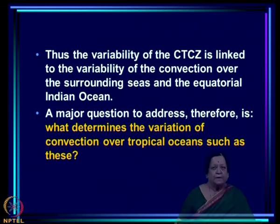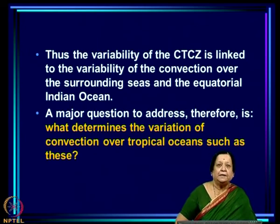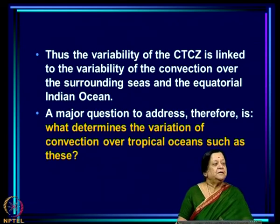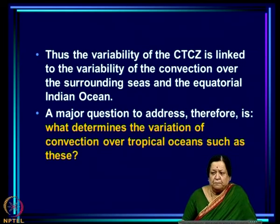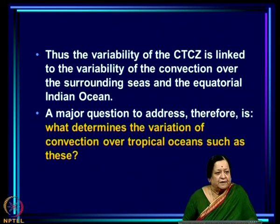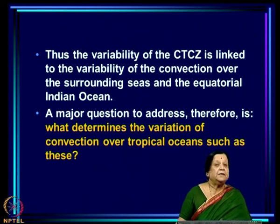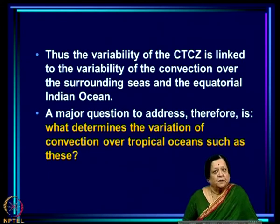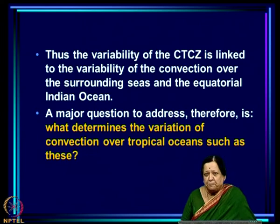It is now very clear that the variability of the CTCZ is linked to the variability of convection over the surrounding seas and the equatorial Indian Ocean. The million-dollar question is: what determines the variability of convection over these oceans? Convection on land also impacts convection over the ocean and vice versa, but we still need to know whether there are factors that determine the variation of convection over tropical oceans, as those will be critical for understanding monsoon variability.